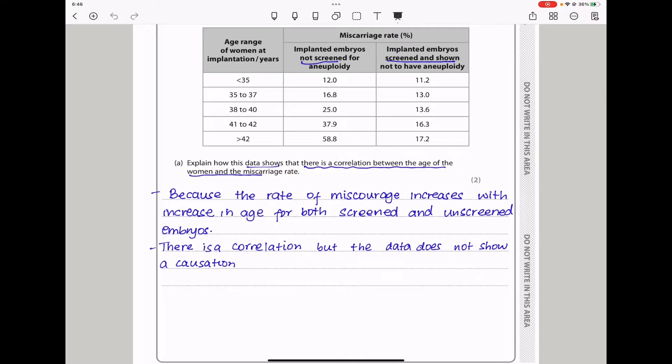The first question asks, Explain how this data shows that there is a correlation between the age of the women and the miscarriage rate. From the data, we can see that the rate of miscarriages increase as age increases, whether they were screened for aneuploidy or not. However, we can conclude that this is a correlation and not a causation. Because the rate of miscarriage increases with increasing age for both screened and unscreened embryos, there is a correlation but the data does not show a causation.